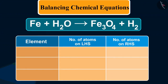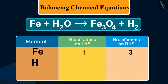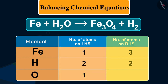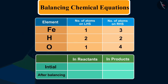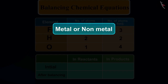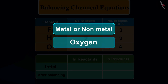We can observe that the number of iron atoms on LHS is 1 and on RHS is 3. The number of hydrogen atoms on LHS are 2 and on RHS are also 2. And finally, oxygen atoms: 1 on LHS and 4 on RHS. It is often convenient to start balancing with the compound that contains the maximum number of atoms, or we can also balance the metal or non-metal first, then oxygen and hydrogen.